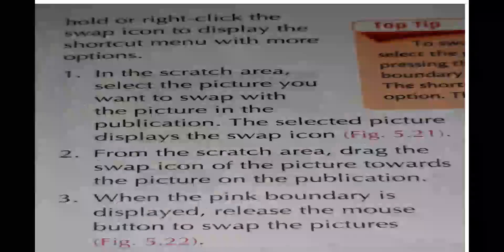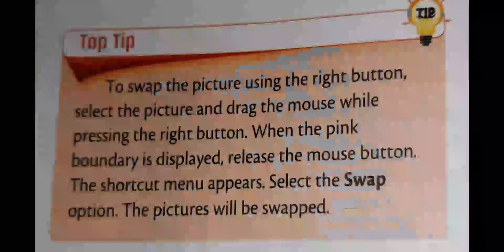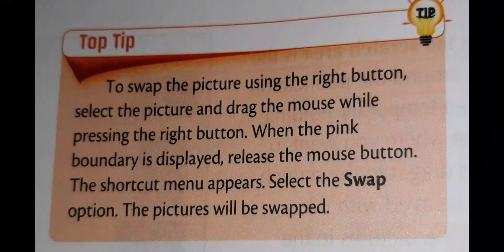Let's start with a tip. To swap the pictures using the right button, select the pictures, drag the mouse while pressing the right button. When the pink boundary is displayed, release the mouse. Just like you can see the pink boundary, then you can leave the mouse. Then you can see shortcut appear. Select the swap option. The pictures will be swapped.